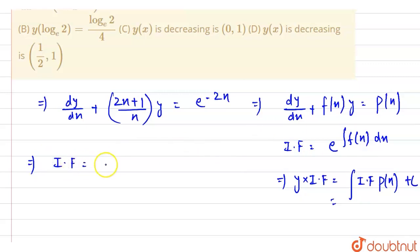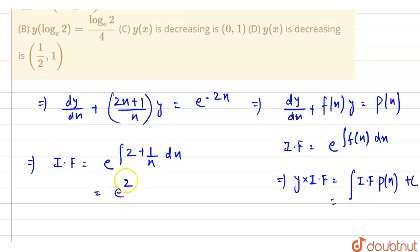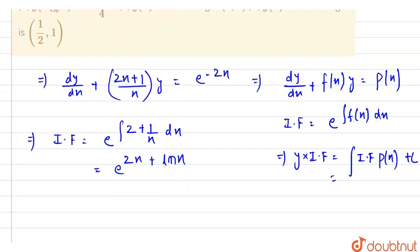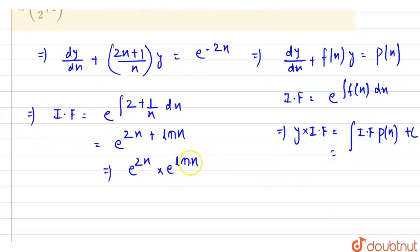First we have to find IF. IF is given by e raised to the power of the integration of (2 + 1/x) dx. Calculating this, we get 2x + ln x. So IF = e^(2x) · e^(ln x). Replacing e^(ln x) by x, this gives us x · e^(2x). So our integrating factor IF is x·e^(2x).